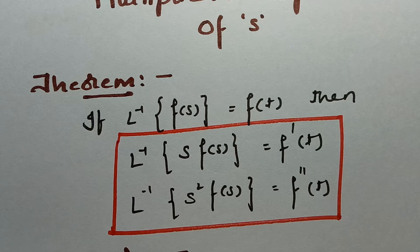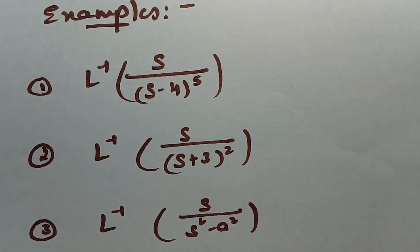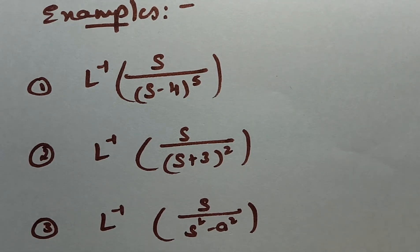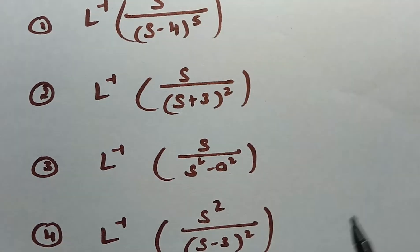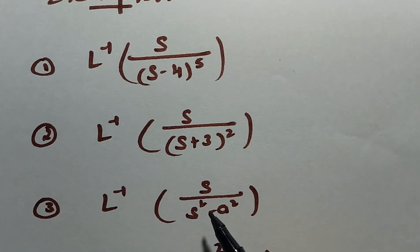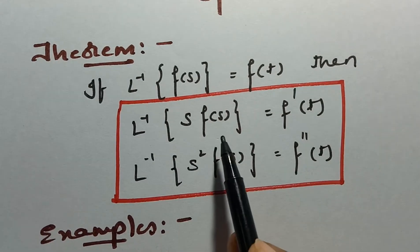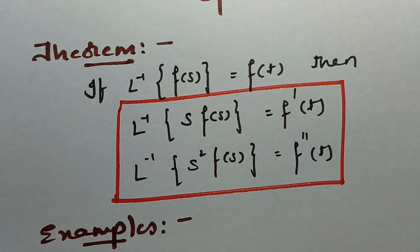This is the most important and very easy point: whenever you see F(s) multiplied by s, we have to use the theorem on multiplication. Here are some examples — by seeing the questions you can easily identify that s is multiplied in the numerator. If there is s², we have to make a double derivative of f(t). The multiplication theorem states that s·F(s) equals f′(t). These are most important, very easy, and expected questions of the examination.